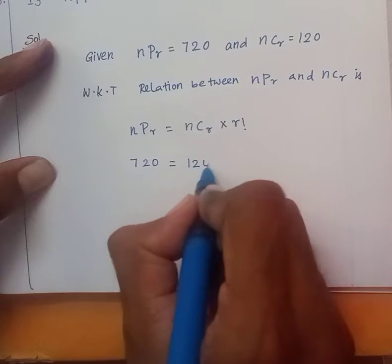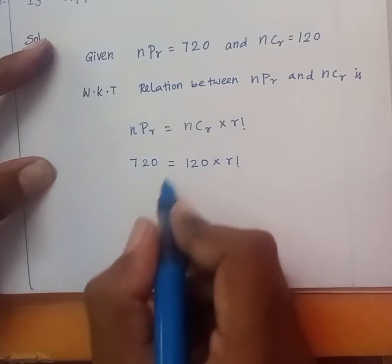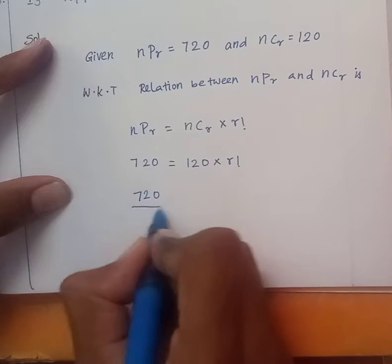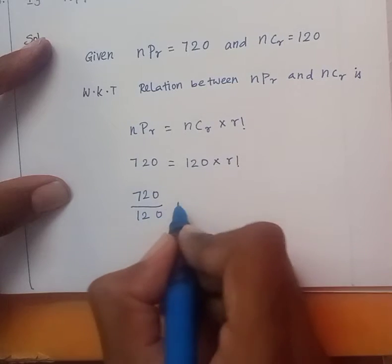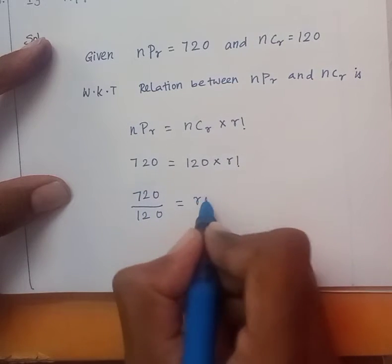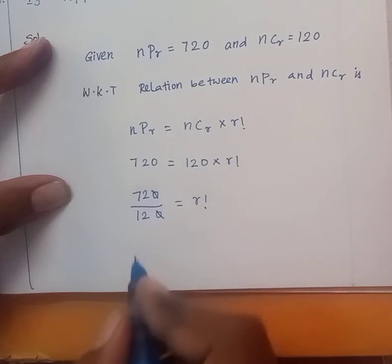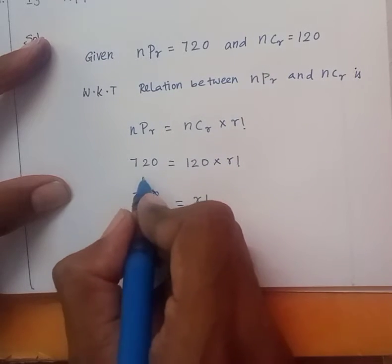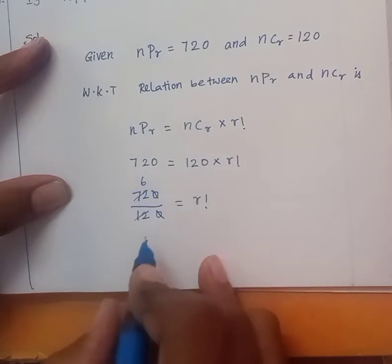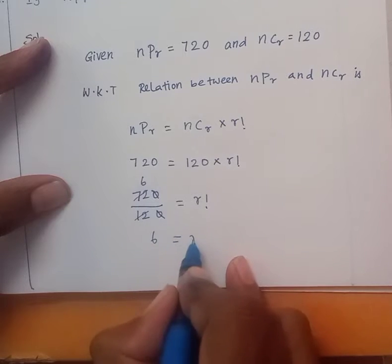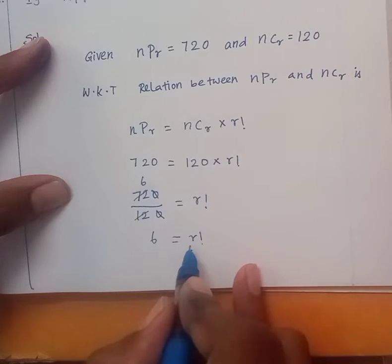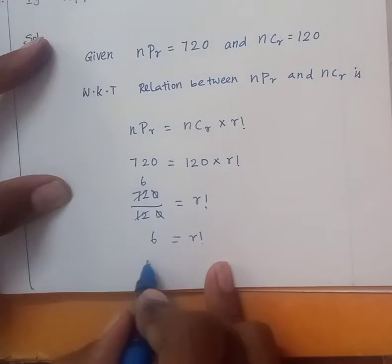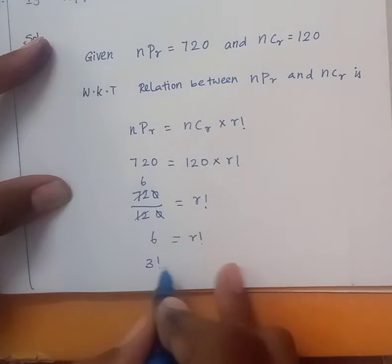Substituting the values: nPr is 720, nCr is 120. So 720 equals 120 into R factorial. Dividing both sides: 720 divided by 120 equals R factorial, which gives 6 equal to R factorial. Since 6 is 3 factorial, R factorial equals 3 factorial.